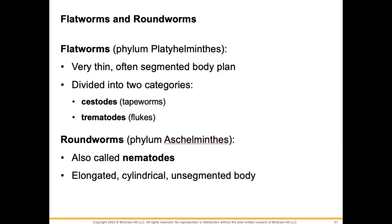There are flatworms, which are very thin, usually segmented body, divided into two categories. We have cestodes, which are the tapeworms, and then trematodes, which are flukes. Then we have roundworms, referred to as nematodes. These are elongated, cylindrical, and unsegmented.